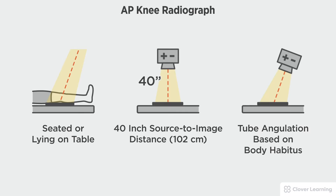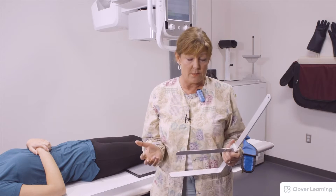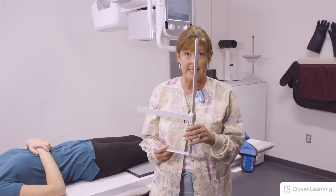A 40 inch source to image distance with tube angulation based on the patient's body habitus. There are many ways knee radiographs can be accomplished — a textbook way and a clinical way. We're going to show the textbook way first, and I recommend using a caliper to measure the knee.